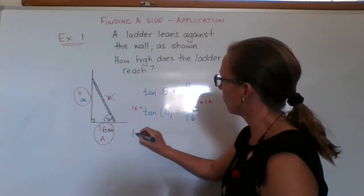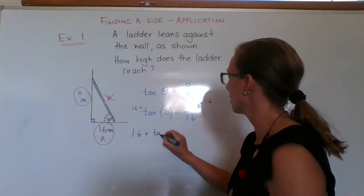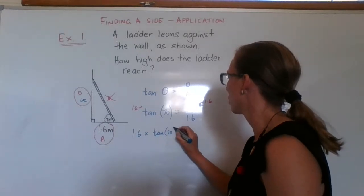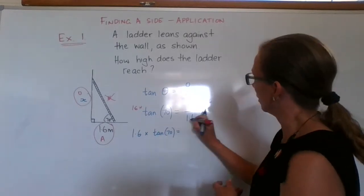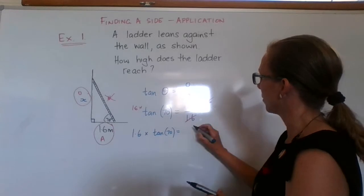So I've got 1.6 times tan 70 equals, this cancels with this and leaves me with x.